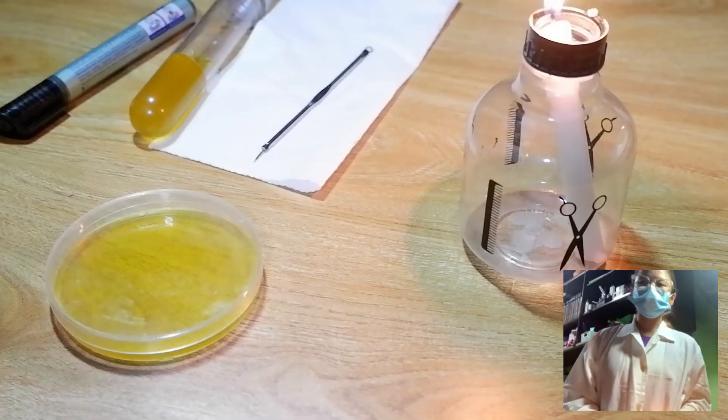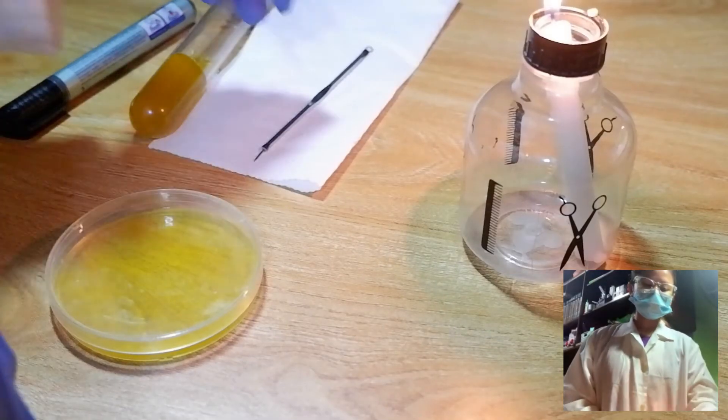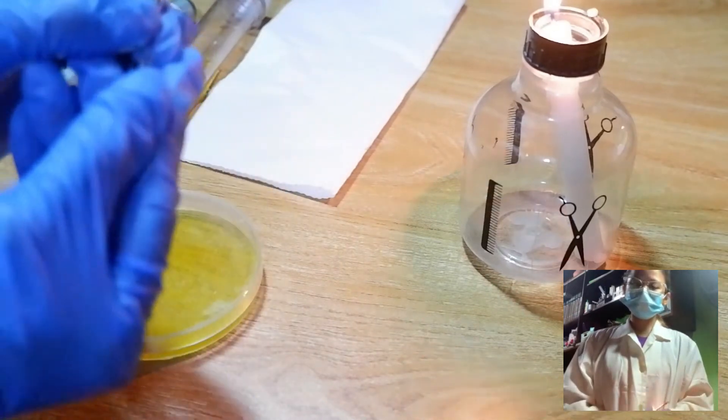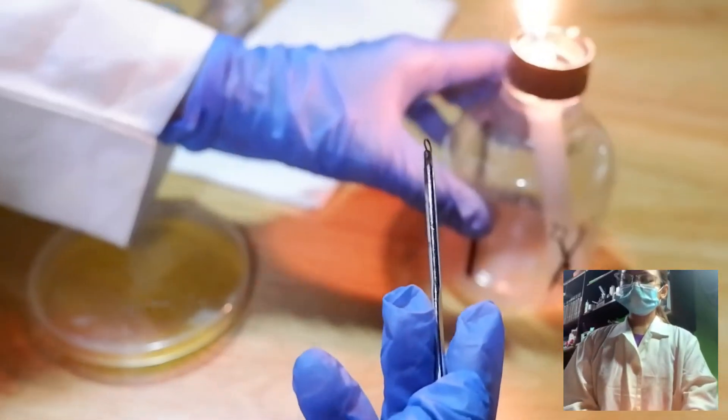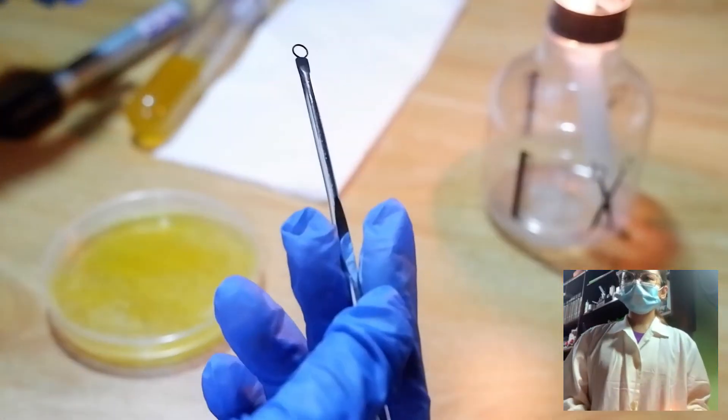Now, we will do the radiant streak method. First, get the inoculating loop, flame it to sterilize, and allow it to cool down for 5 to 10 seconds.